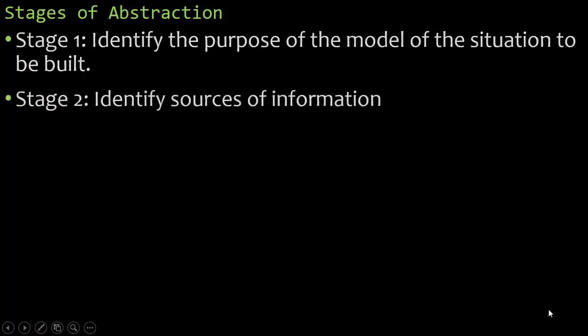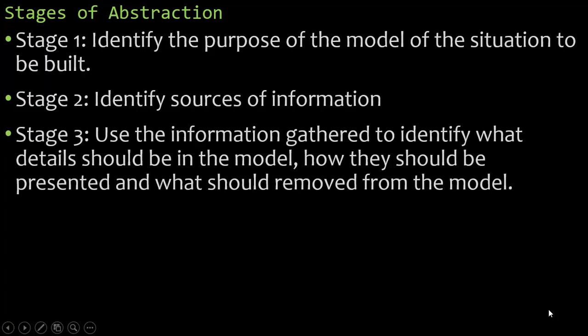Now, there are three stages for abstraction. Stage one, you identify the purpose of the model of the situation to be built. After you do that, you identify some sources of information and then use that information you gathered to identify what details should be inside the model, how they should be presented and what should be removed from the model.